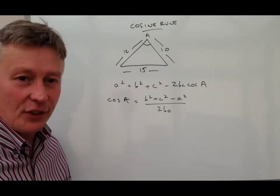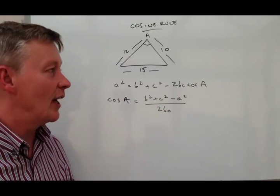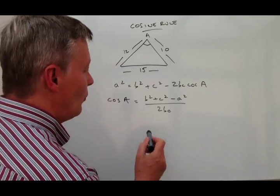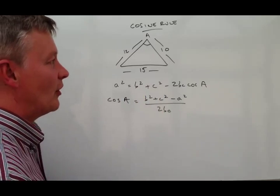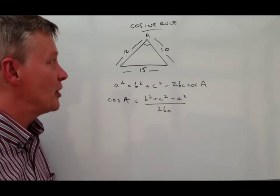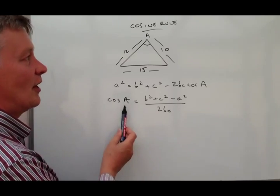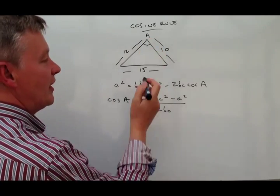So you either remember it or you can do the deriving. What we need to do with this is just make sure that we've got all the correct bits of information because we're looking to get this value A here, cos A.